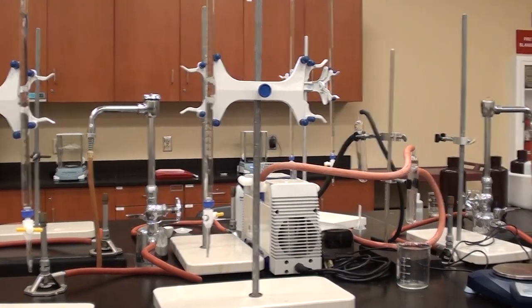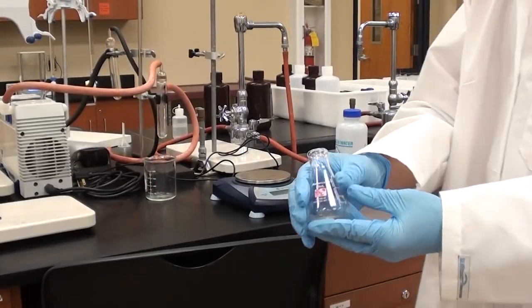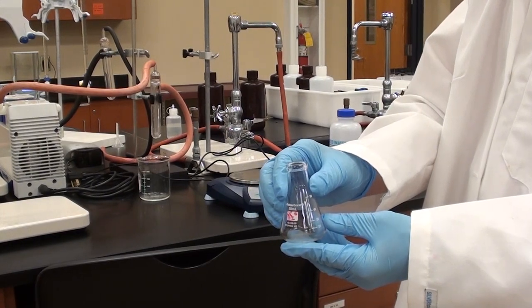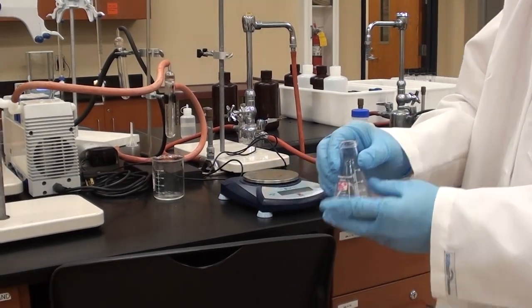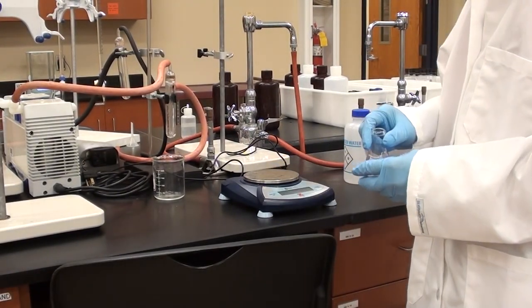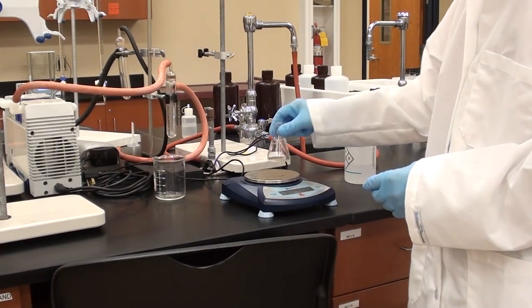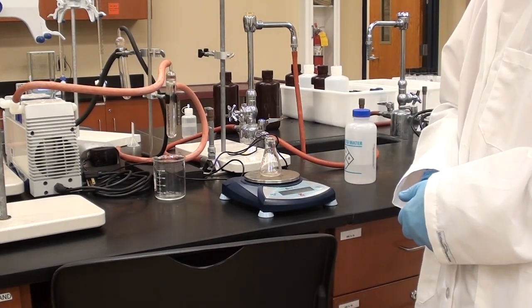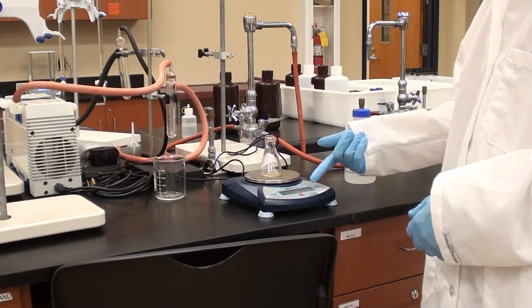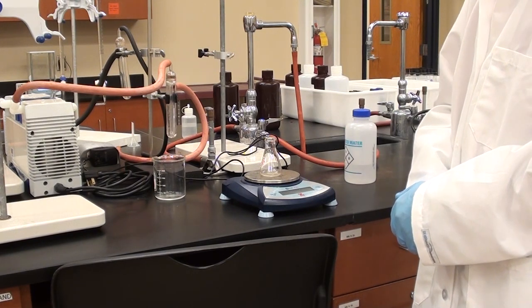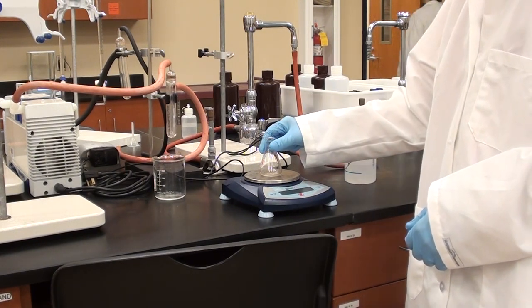And what we're going to do first is weigh this 25 or 50 milliliter, in this case, Erlenmeyer flask. So he's zeroing it, he's putting it on, and he's going to measure to all of the available decimal places. All right, so we've got the initial mass now. That's great.